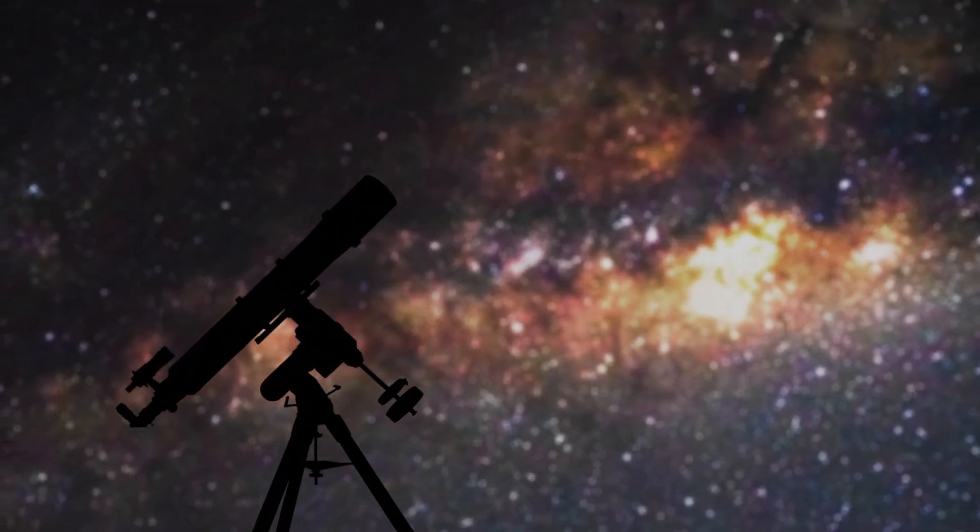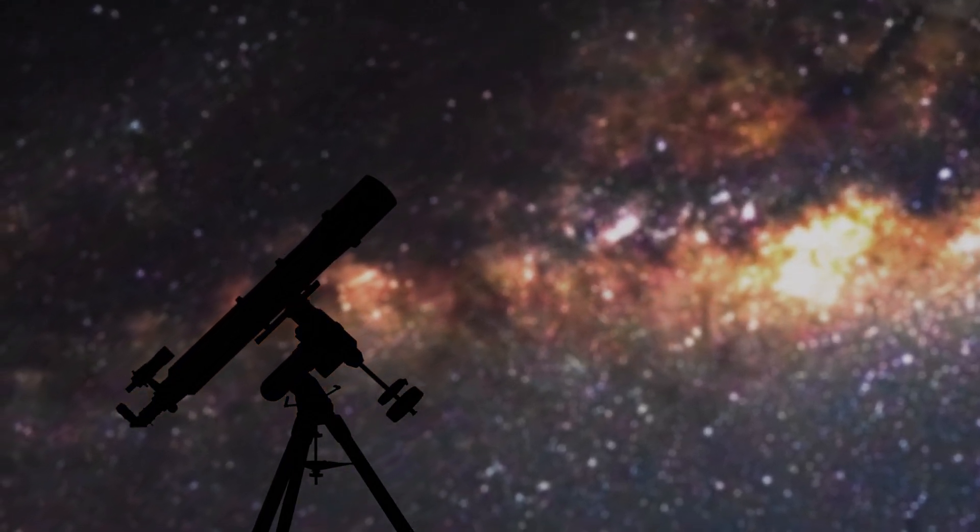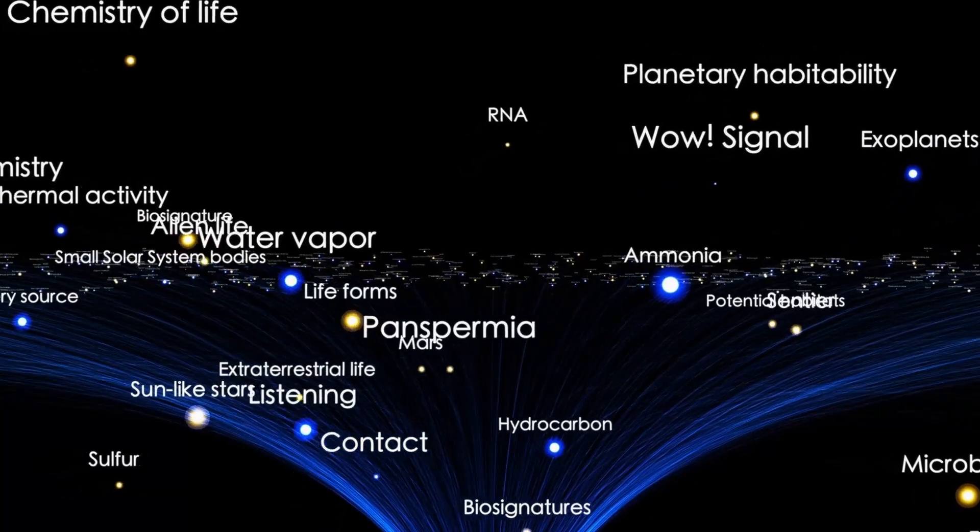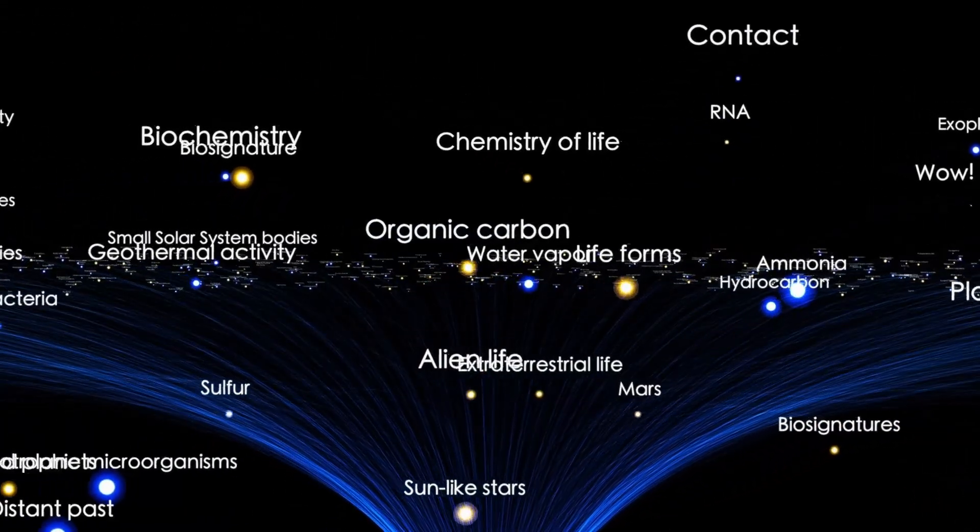These massive currents can deform the star's surface, causing dramatic changes in brightness. The light we observe from Earth—fluctuations, pulsations, and anomalies—are all the result of this dynamic interior.